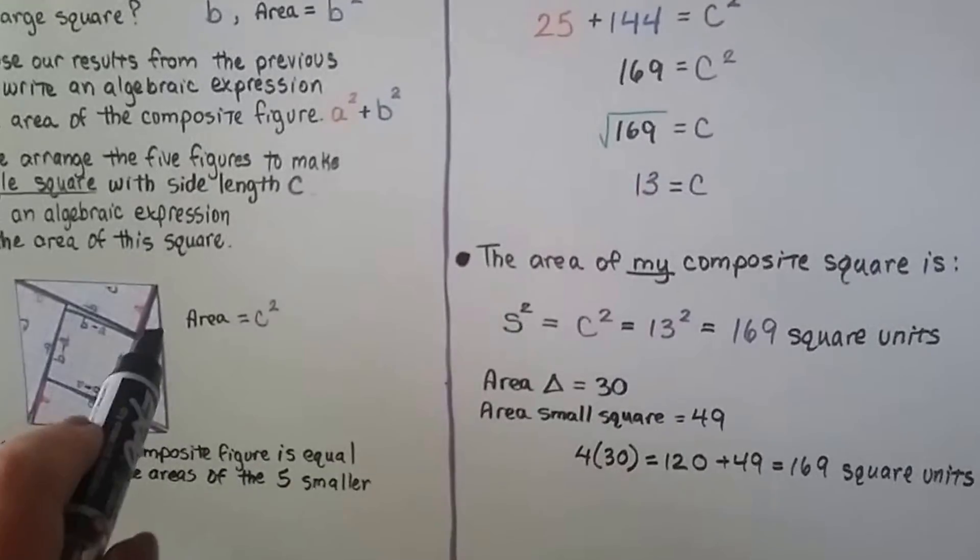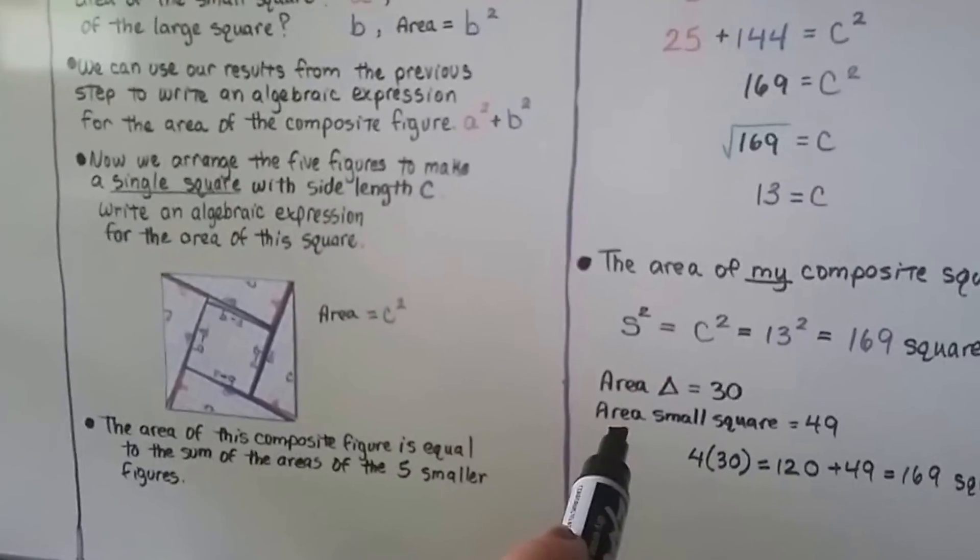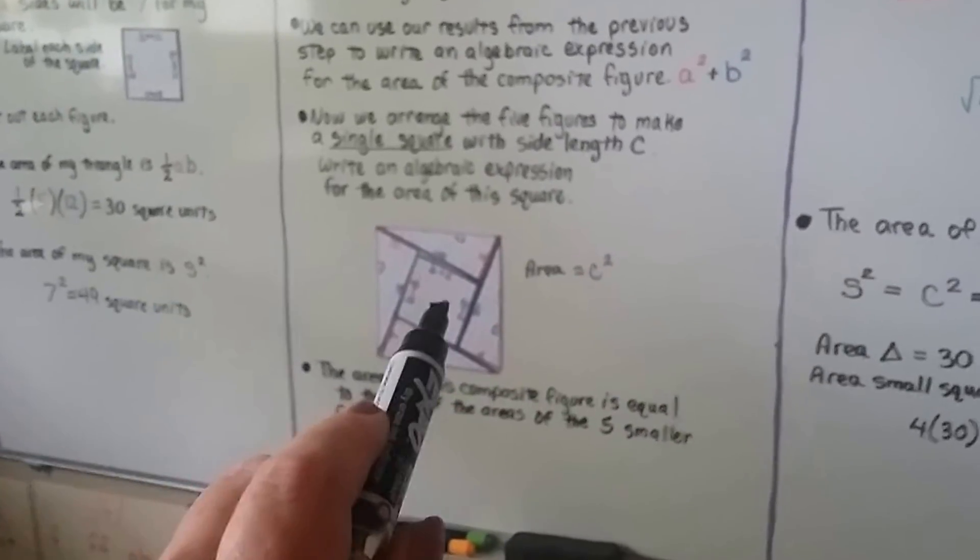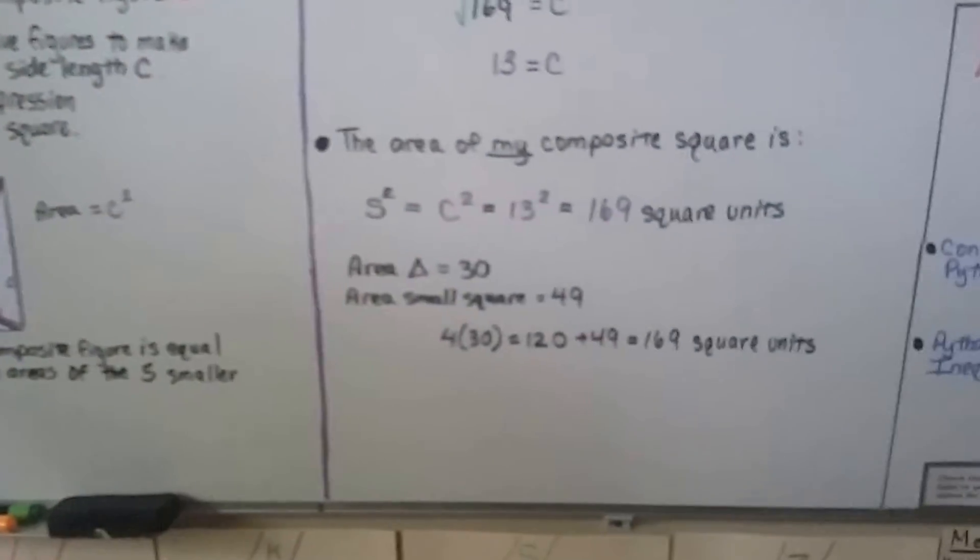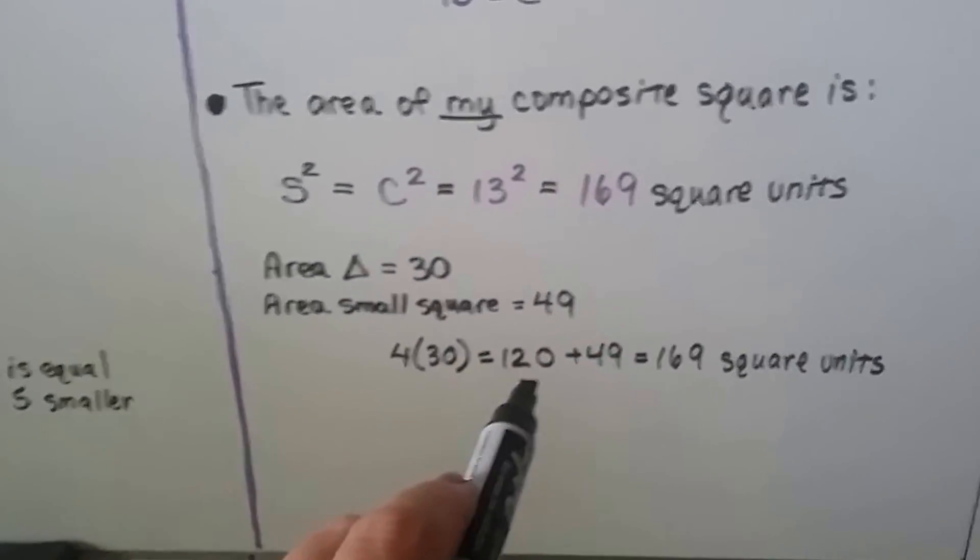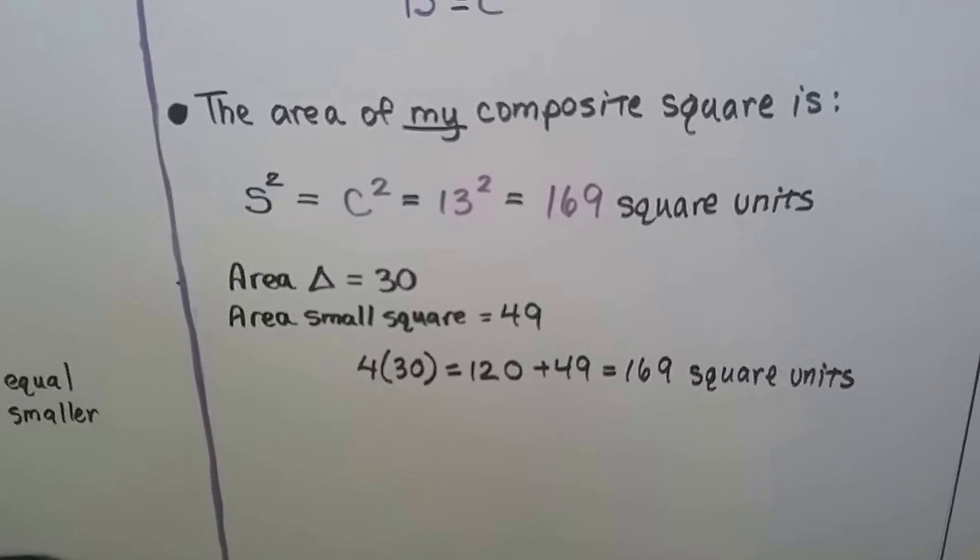And the area of each triangle was 30, we figured that out right here, right? And the area of the small square was 49, we figured that out because it's 7 units by 7 units. And we had 4 triangles, so 4 times that 30 is equal to 120, plus that 49 is 169 square units, see?